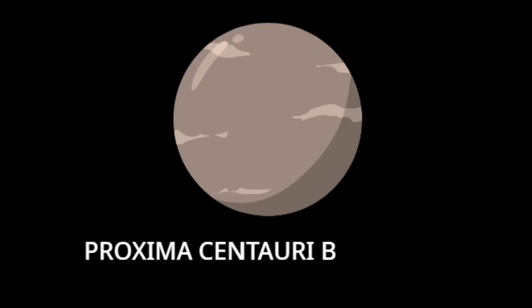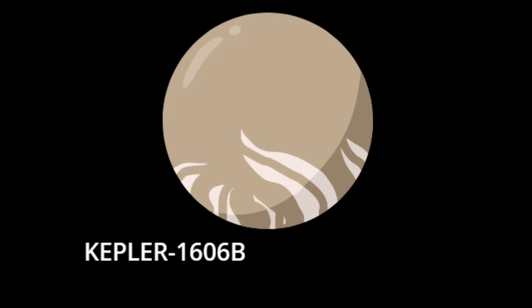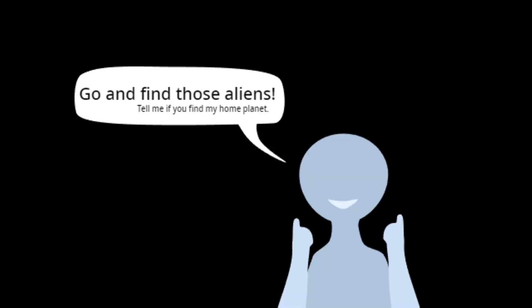The nearest known exoplanet, Proxima Centauri b, is only 4 light years away from the solar system. The farthest known exoplanet is Kepler 1606 b, at 2,870 light years away. Because, again, I am not an educated astronomer yet, I will not be the one to research these exoplanets. I wish the best of luck to whoever decides to do so.